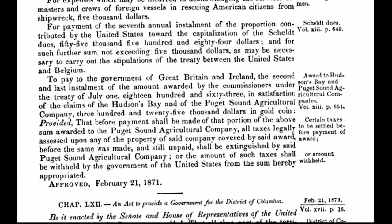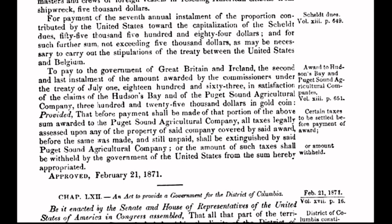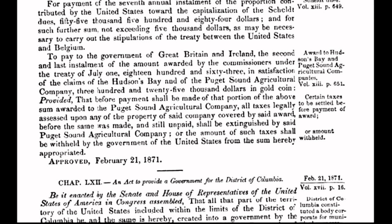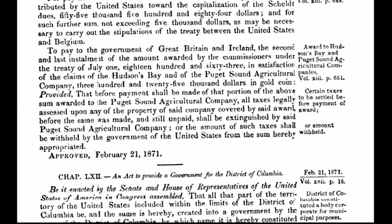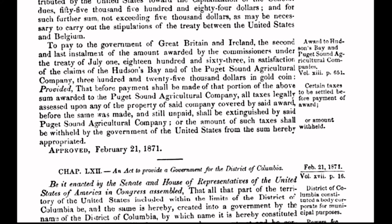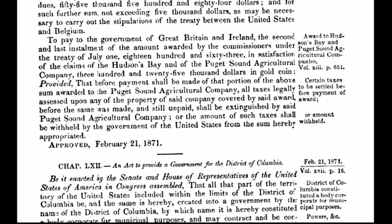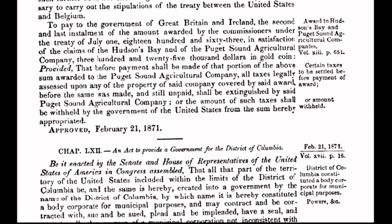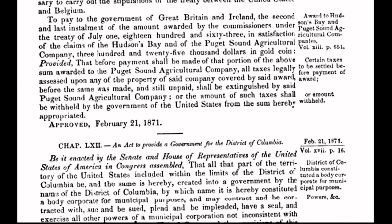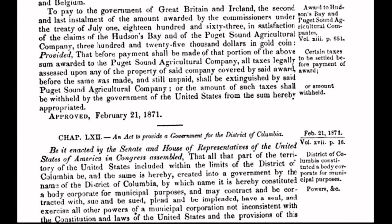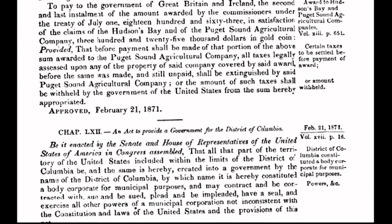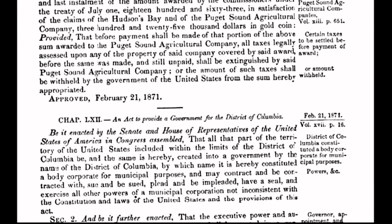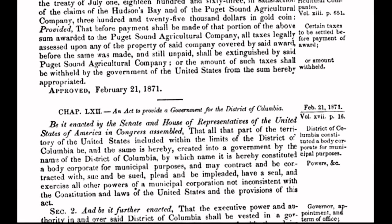With no constitutional authority to do so, Congress creates a separate form of government for the District of Columbia, a 10-mile-square parcel of land. The act was passed when the country was weakened and financially depleted in the aftermath of the Civil War. It was at that time a strategic move by foreign-interest international bankers who were intent upon gaining a stranglehold on the coffers and neck of America. Congress cut a deal with the international bankers, specifically the Rothschilds of London, to incur a debt to said bankers.